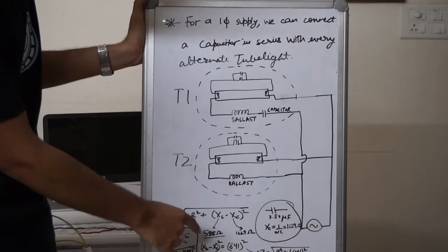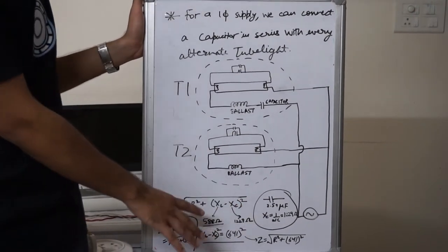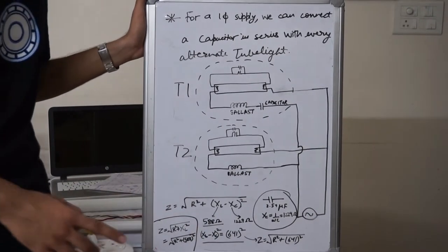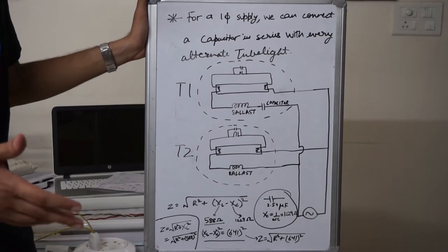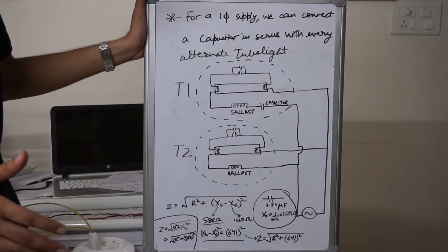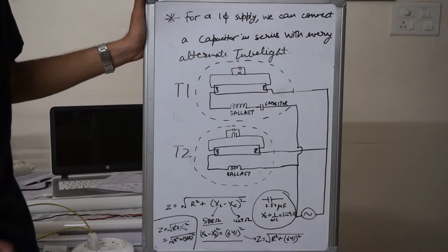Just make sure that the value of capacitance is such that the value of impedance after adding the capacitor is more or less the same as before adding the capacitor, so that the current does not change appreciably.